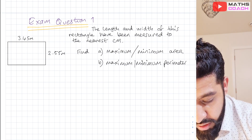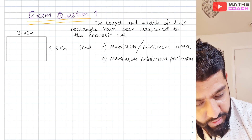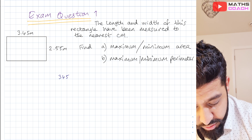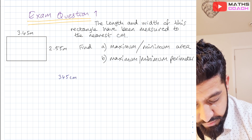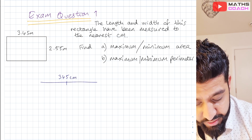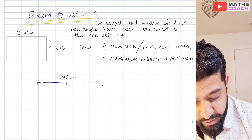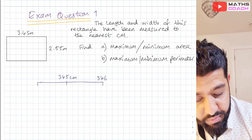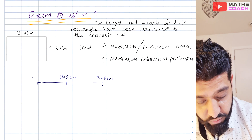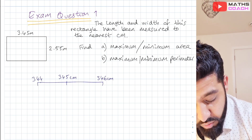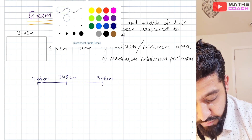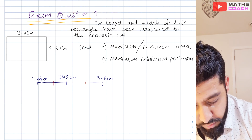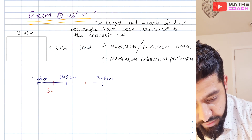Let's have a look at the 3.45. We'll multiply that by 100, so we get 345 centimetres. We can find the upper and lower limits by drawing our number line. The next centimetre up is 346 centimetres, and the one before that is 344 centimetres. In the middle, for both of them, we'll find those values.